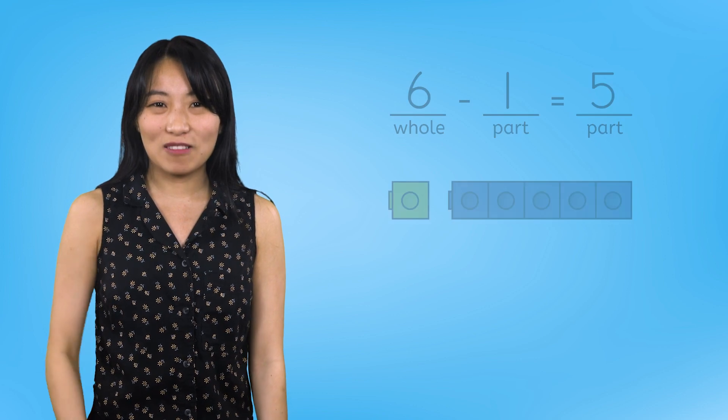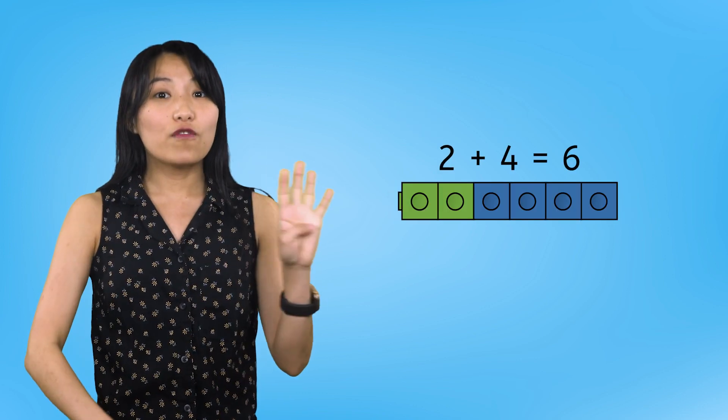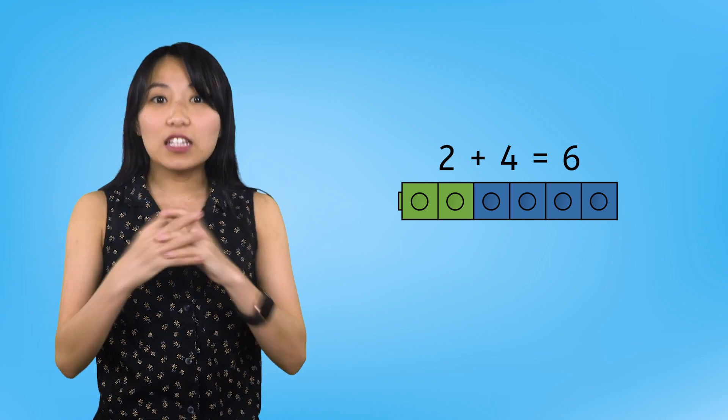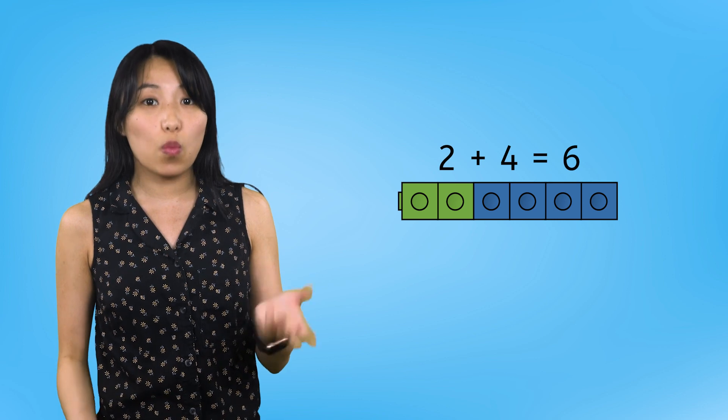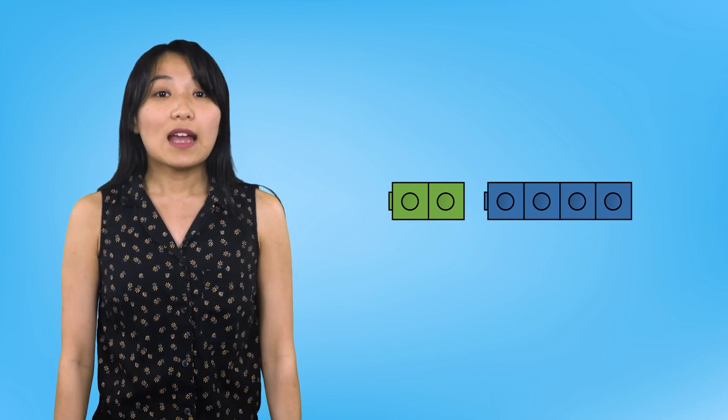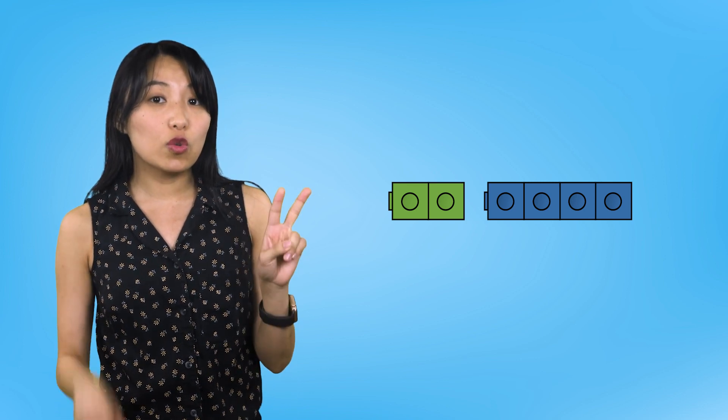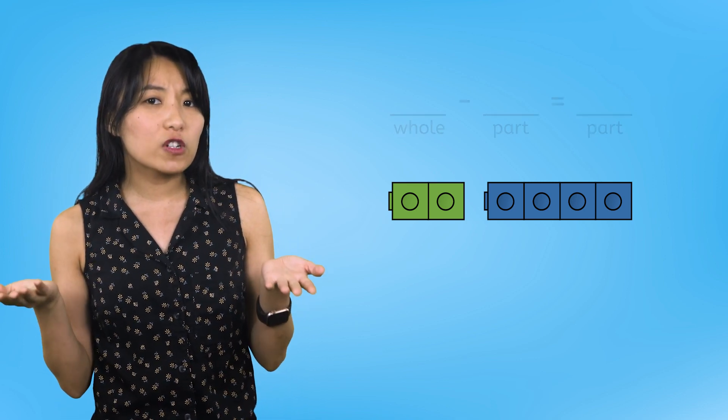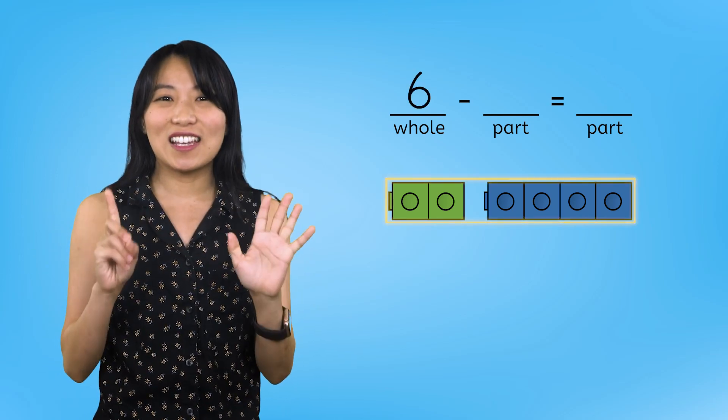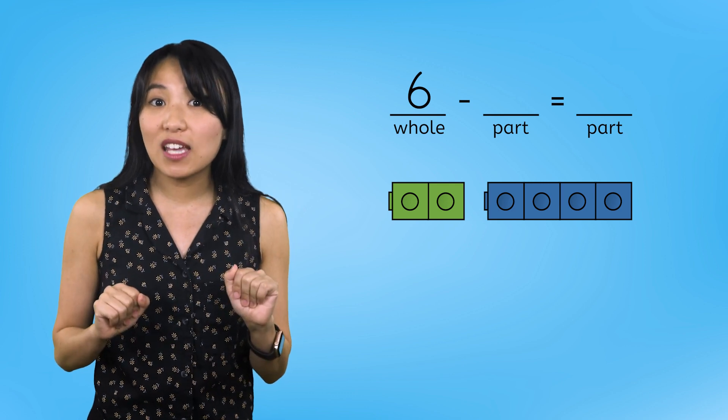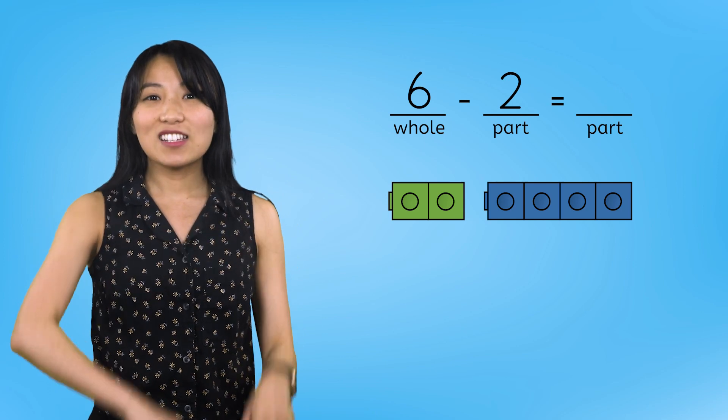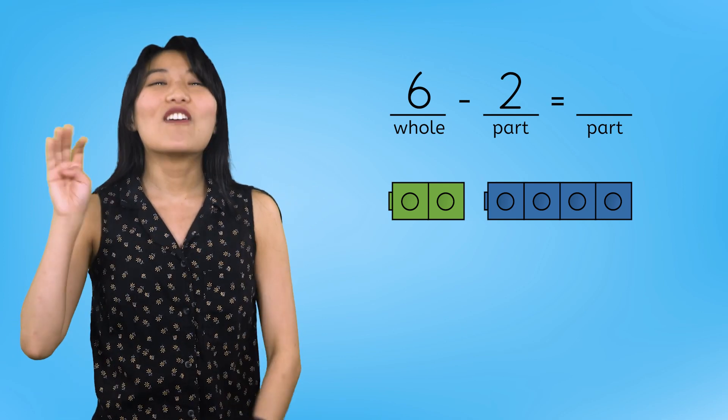Let's try one more. 2 plus 4 equals 6. To decompose this set of 6, we need to take away one part. There we go. We took away 2. Now we have two parts, 2 and 4. What number will come first in our subtraction sentence? Our whole, 6. And which part did we take away? 2. So 6 minus 2 equals 4.